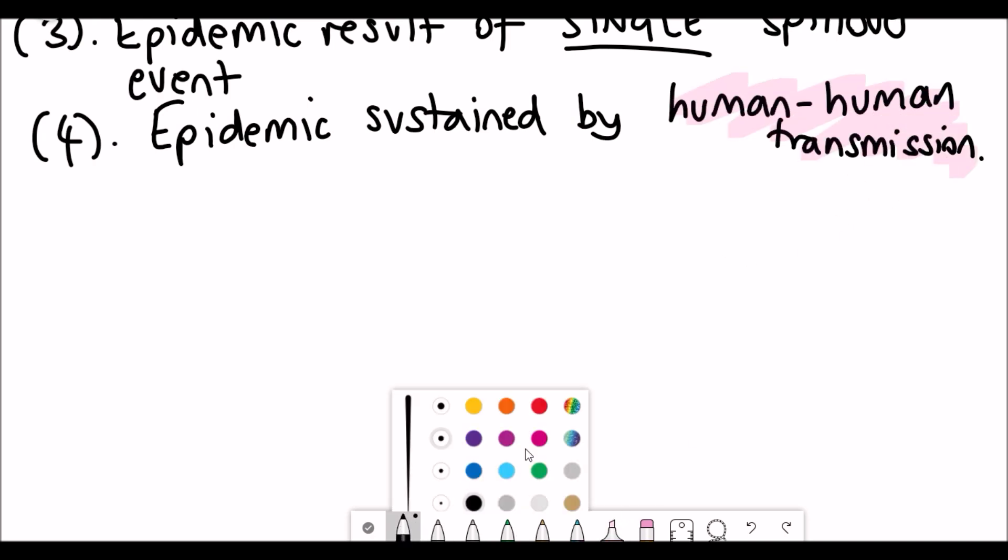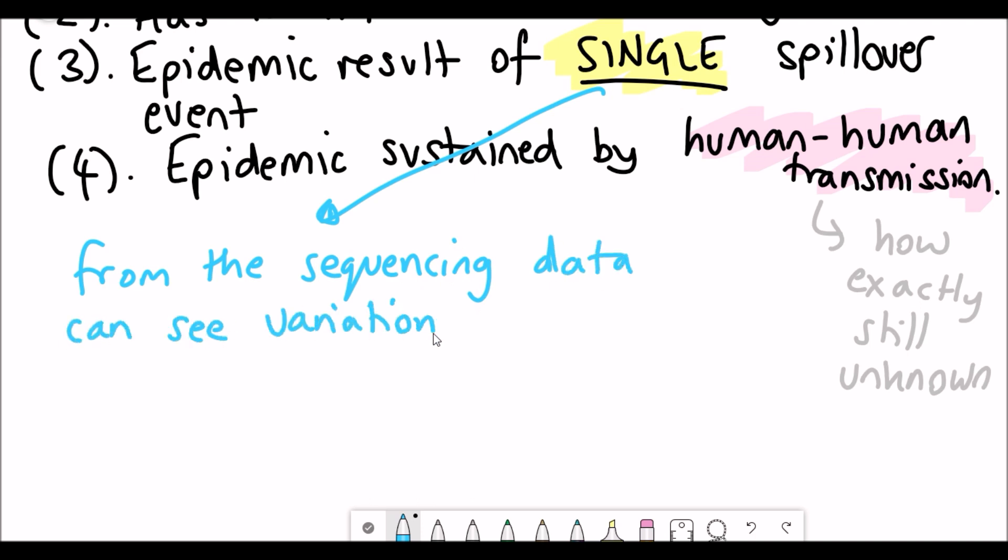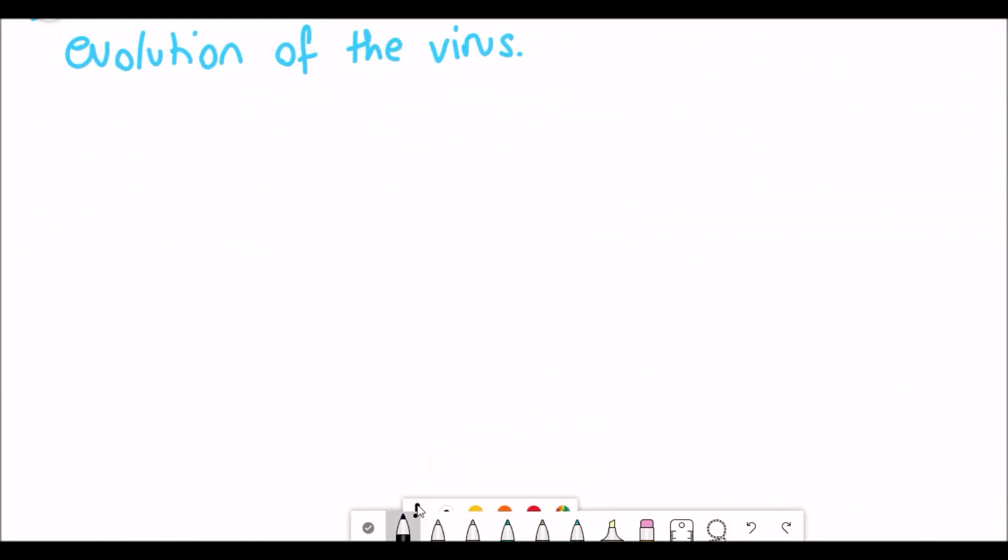How exactly this human-human transmission occurs, though, is yet not fully understood. But understanding this would be really important to knowing how best to prevent the spread. And as I mentioned, it's so far thought to be a single spillover event. And we can tell this by tracking how mutations have changed over time in the coronavirus. And so you can develop this kind of molecular clock to see the evolution of the virus and the spread.